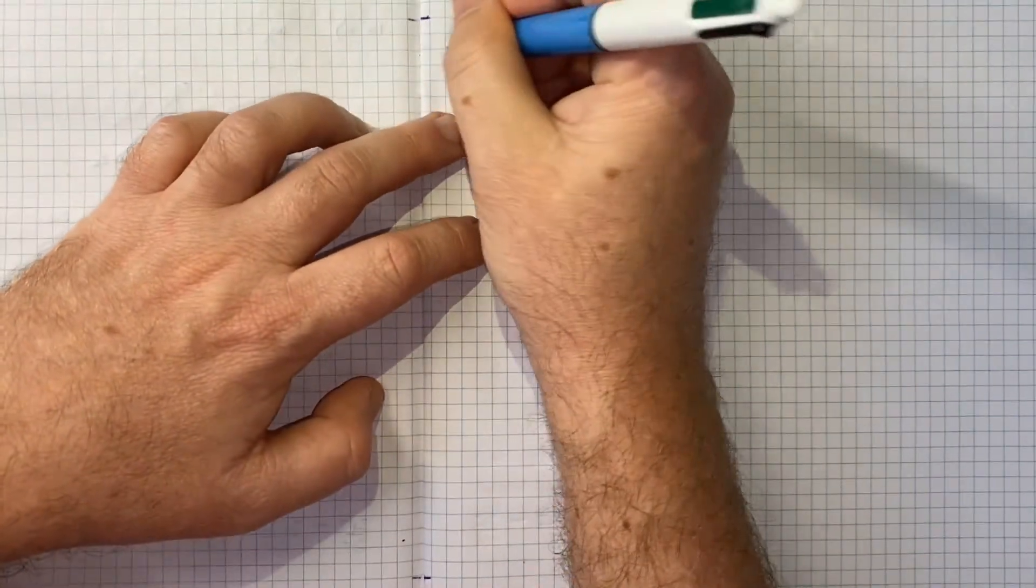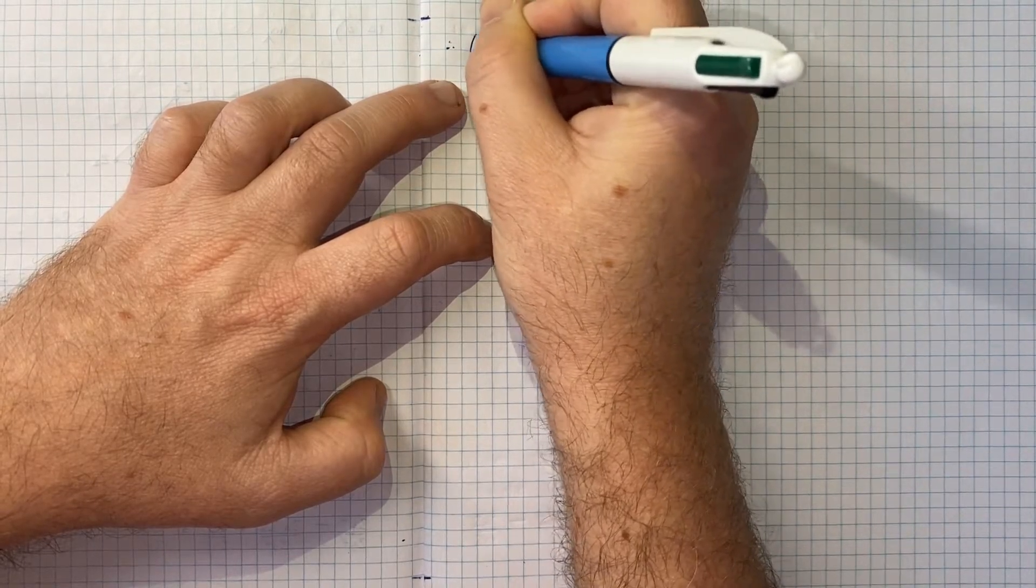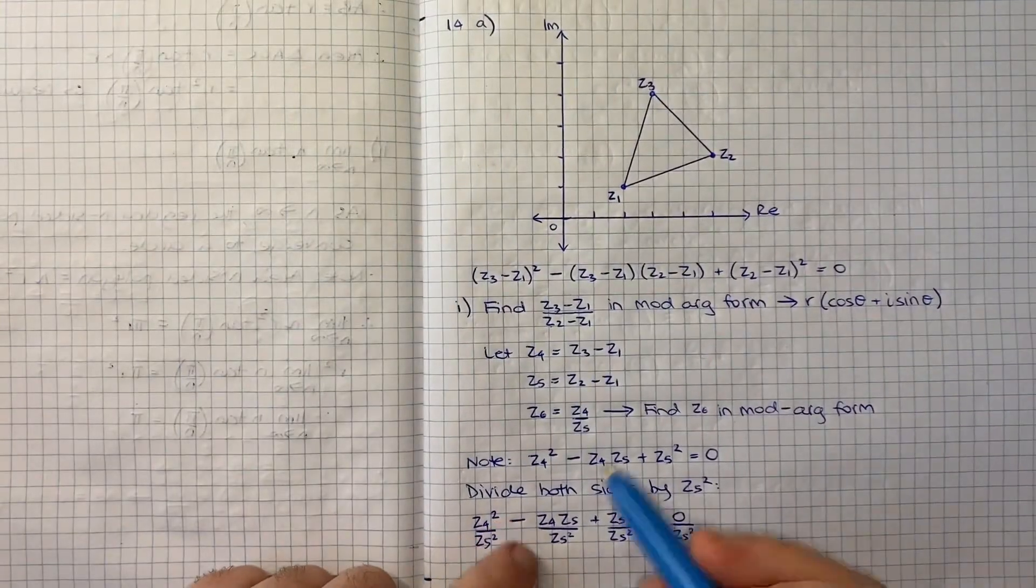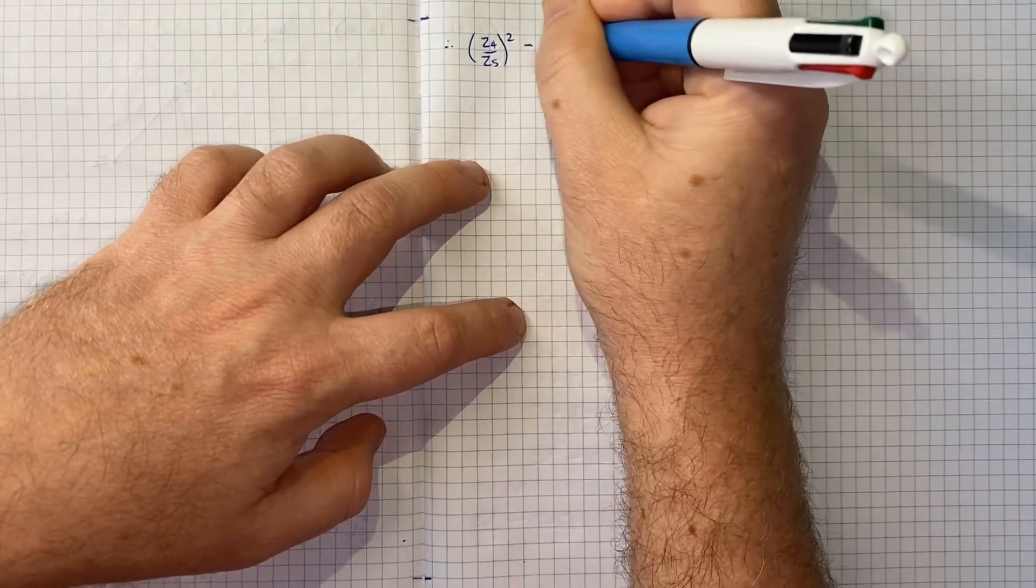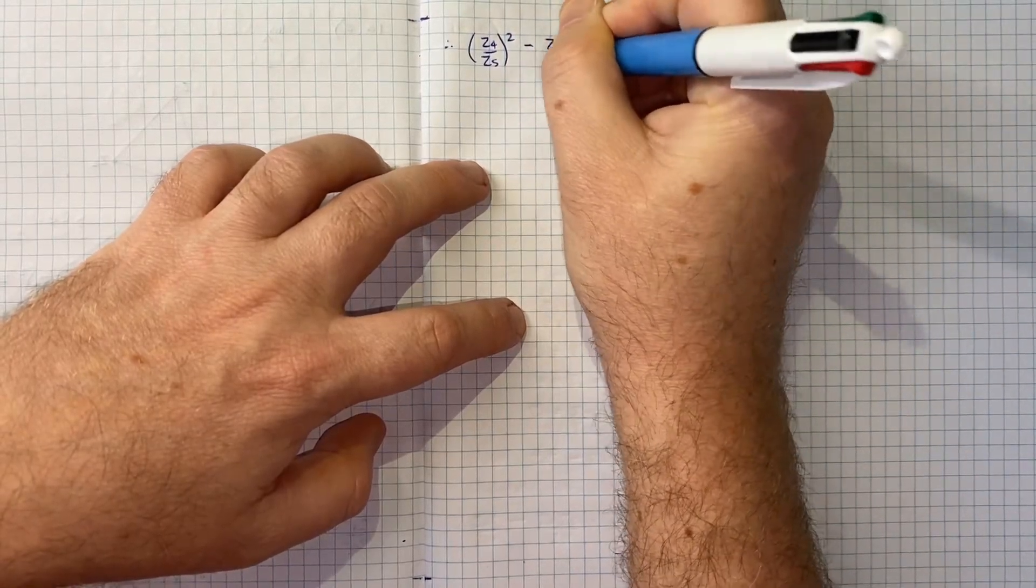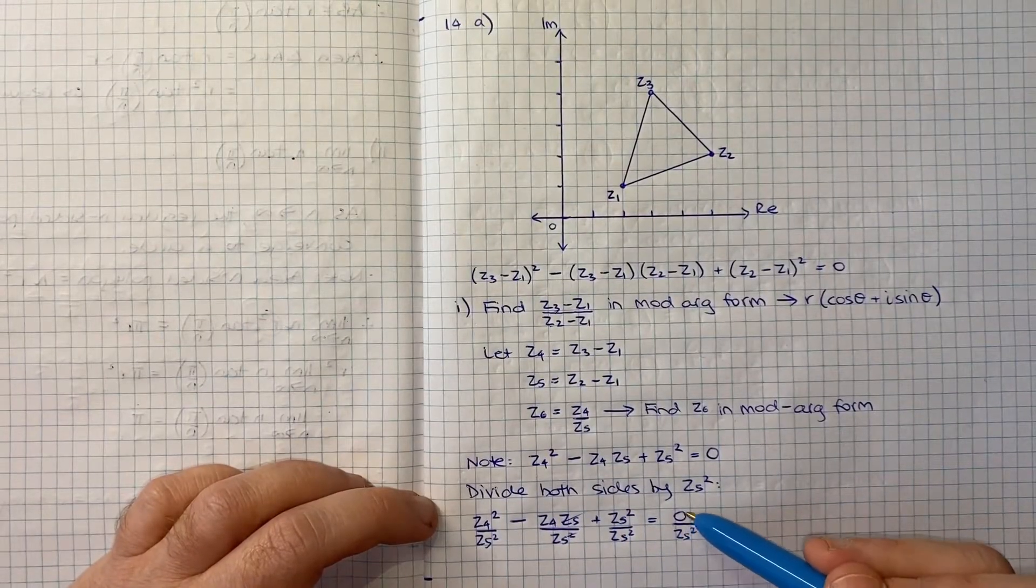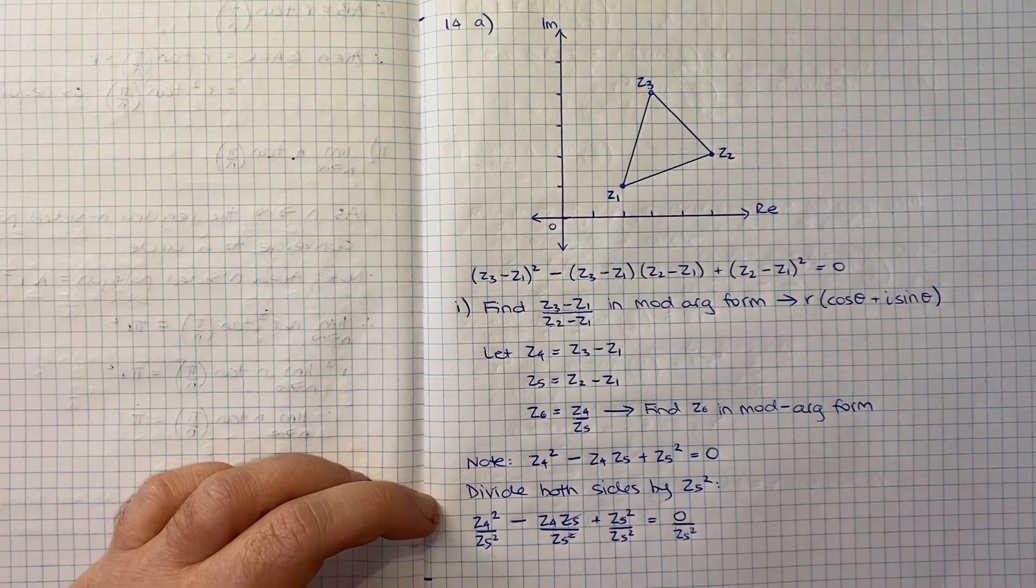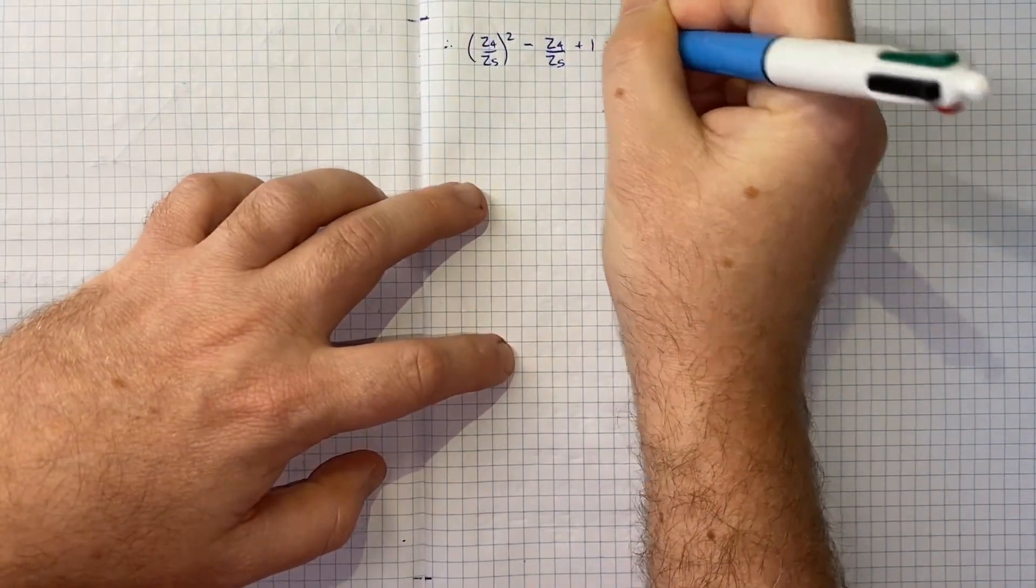We can say therefore we've got Z4 over Z5 all squared, and then we've got minus Z4 over Z5, so minus Z4 over Z5. And then this is simply plus one equals zero, since zero divided by anything will stay zero.